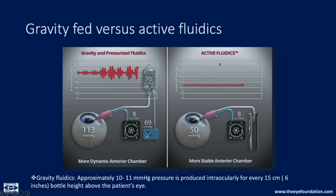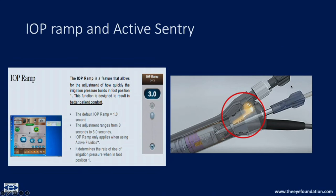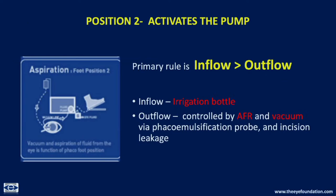In gravity-fed fluidics there is high variation in IOP. During irrigation only, IOP is at its highest. Once aspiration begins, IOP starts to fall. During occlusion, IOP rises again since irrigation continues but nothing enters the probe. When the occlusion breaks, IOP falls again. In active fluidics, IOP is much more stable - targeting around 55 mmHg, gravity fluidics varies between 30 to 80 mmHg, while active fluidics maintains a variation of only about 2.6 mm. This is achieved through sensors in the irrigation and aspiration lines. The active sentry additionally has a sensor in the handpiece.